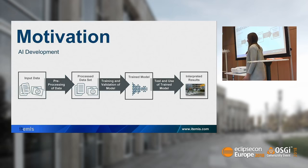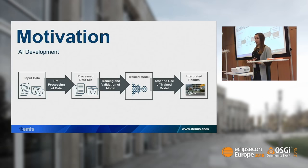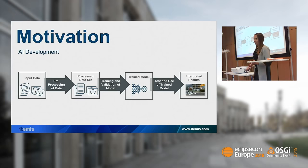Giving a short summary of this development process: you always have input data which have to be pre-processed. This means you have to collect them and prepare them, because often the data you get are not suitable for learning or don't have sufficient quality. In general, this part of pre-processing data takes around 70% of the work of an AI developer — so this is a huge effort.